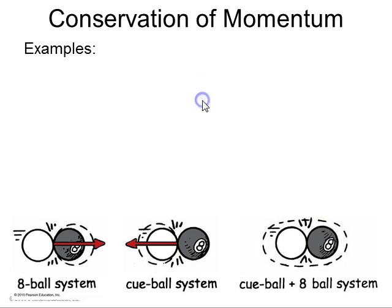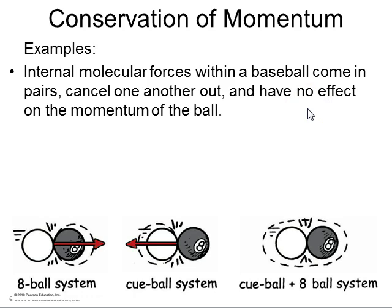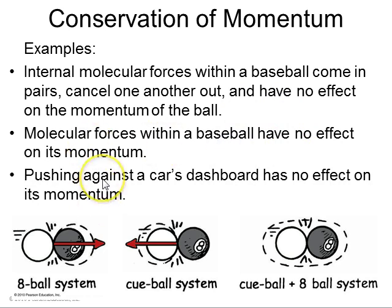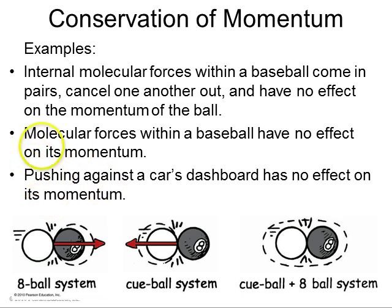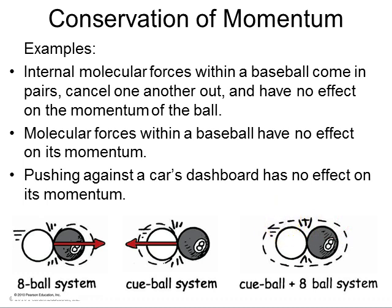Internal molecular forces within a baseball come in pairs, cancel each other out, and so have no effect on the momentum of a flying baseball. Similarly, pushing against a car's dashboard has no effect on the momentum of the whole car plus you system. Looking at pool examples: the white ball hits the 8-ball. It depends what you choose as your system. If the system is just the 8-ball, an external force acts on it and its momentum increases. If the system is the white ball plus the 8-ball, there are no external forces, and so the momentum inside this collision is conserved.